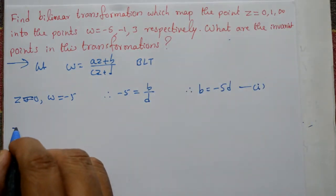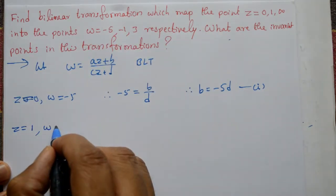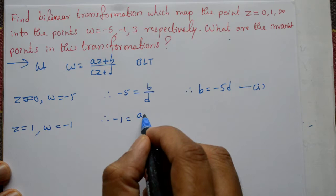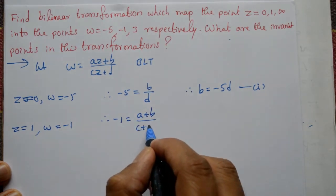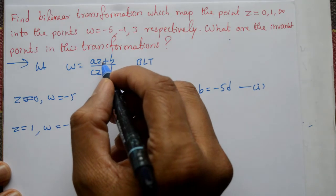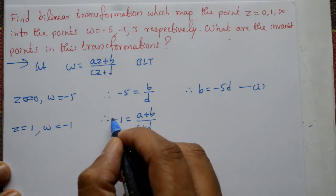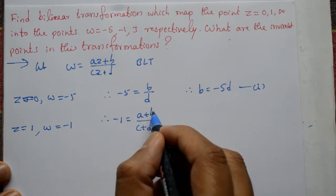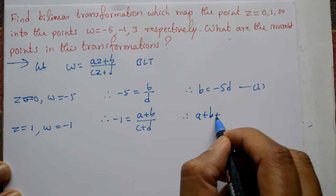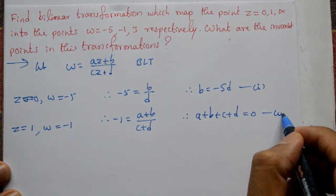Second value: z = 1 and ω = -1. Therefore -1 = (a + b) / (c + d). Cross multiply karne par: -c - d = a + b, shift karne par a + b + c + d = 0. This is equation number 2.